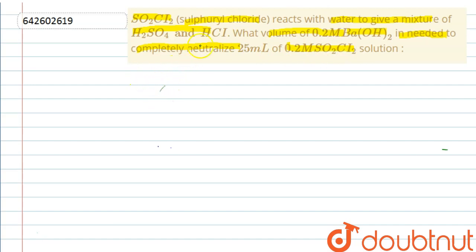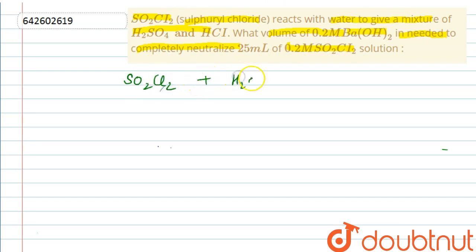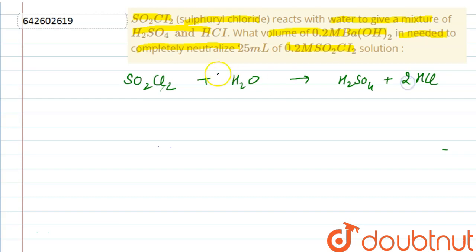First, we write down the reaction of SO₂Cl₂: SO₂Cl₂ + 2H₂O → H₂SO₄ + 2HCl. We balance this equation — it requires 2 moles of water and produces 2 moles of HCl. This equation is now balanced.